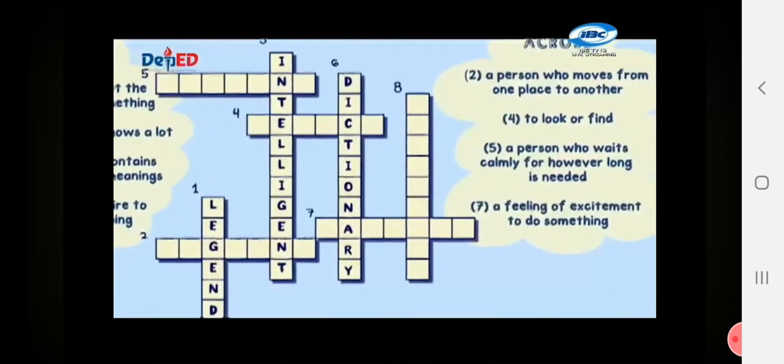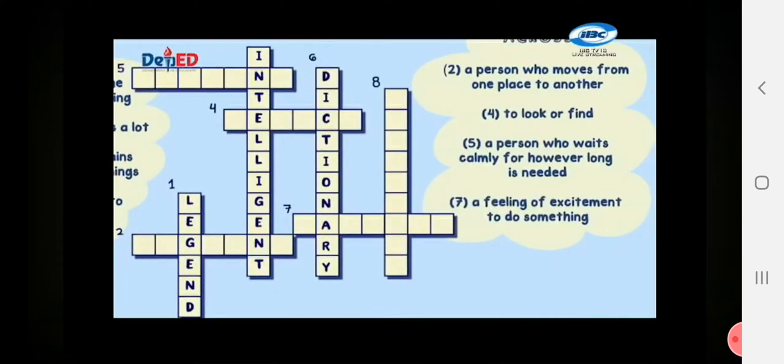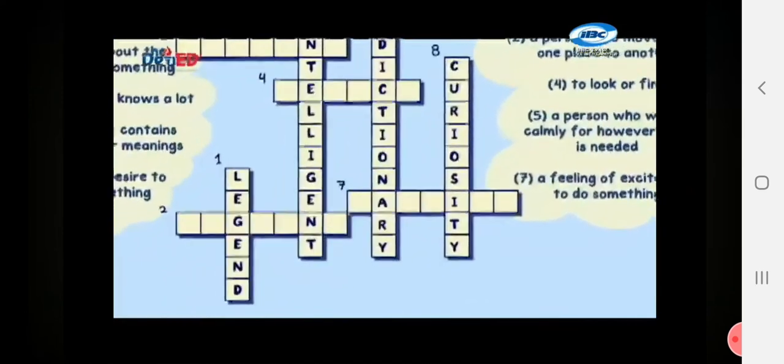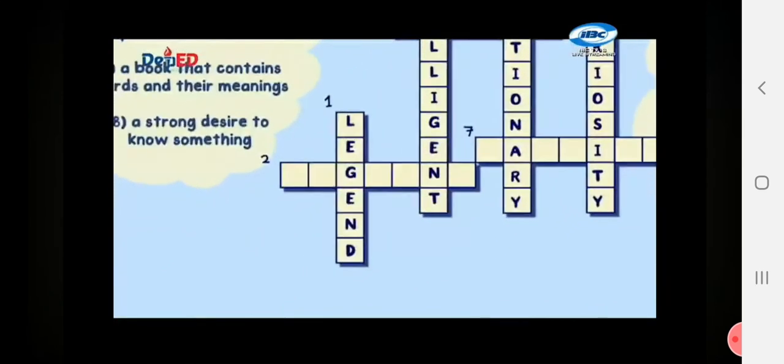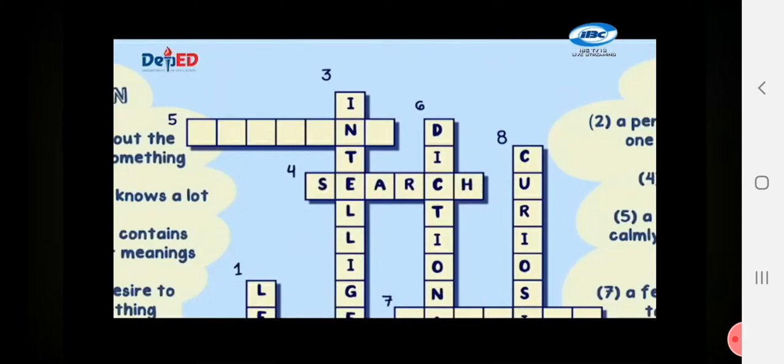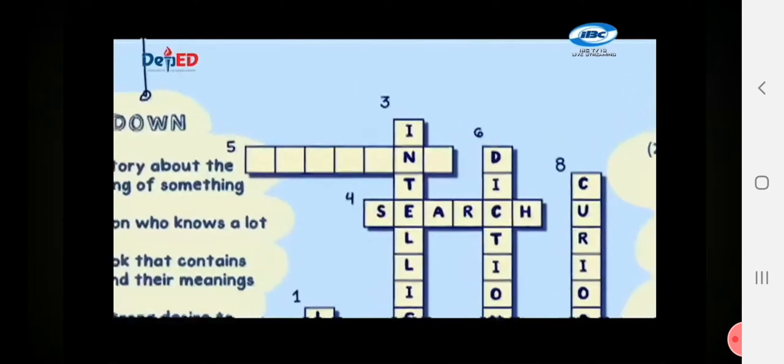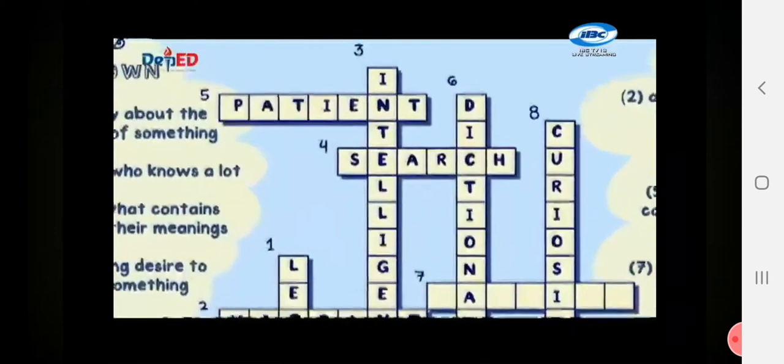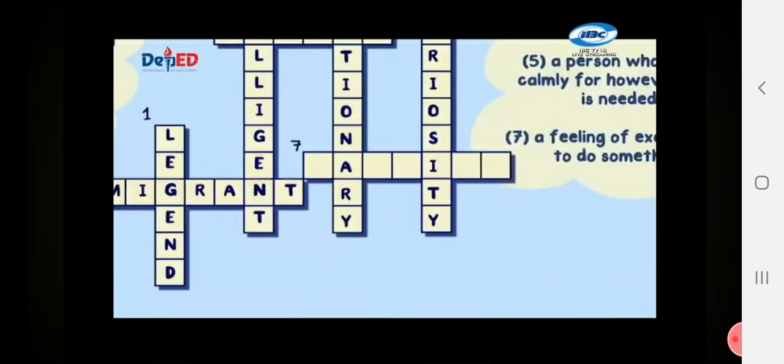Number eight, it is a word which means a strong desire to know something. It is curiosity. Let's now answer the horizontal word puzzles. Number two, a person who moves from one place to another is a migrant. Number four, a word which means to look or find is search. The word that describes a person who waits calmly for however long a time is needed, it's patient. And finally, number seven, a feeling of excitement to do something. It is passion.